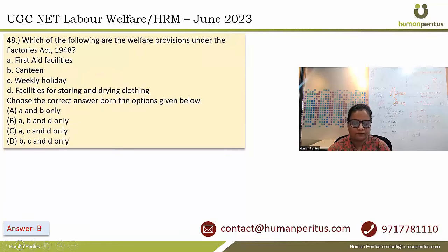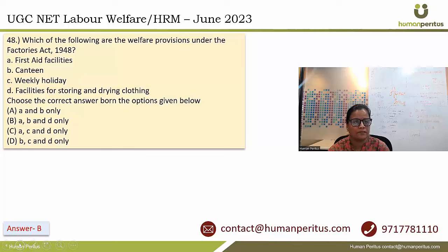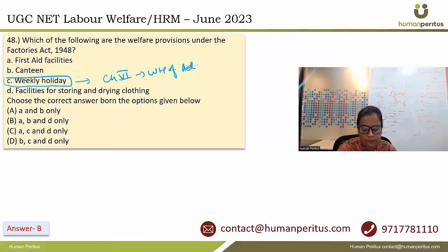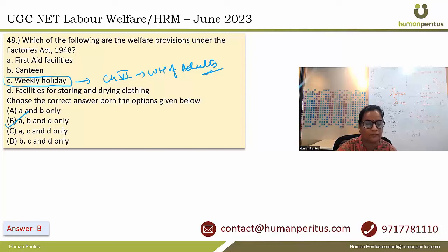Which are the welfare provisions under the Factories Act 1948? The act has a whole chapter on welfare provisions: first aid facilities, canteen, and facilities for storing and drying clothing are welfare provisions. Weekly holiday is not a welfare provision — it falls under Chapter 6 on working hours of adults. So the answer is A, B and D — that is option B.